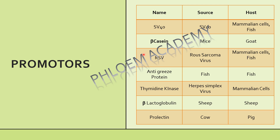Next is your anti-freeze protein. It is very simple — anti-freeze protein is obtained from fish and can be used in fish. So the source and the usage organism are the same here. Next is thymidine kinase, which is highly, highly important from your exam point of view.